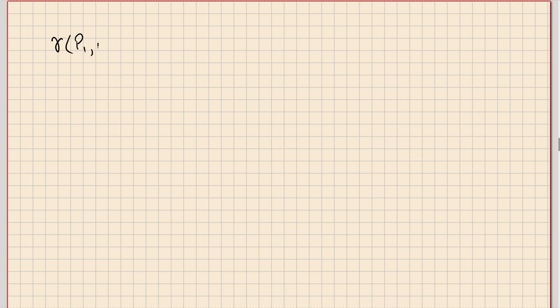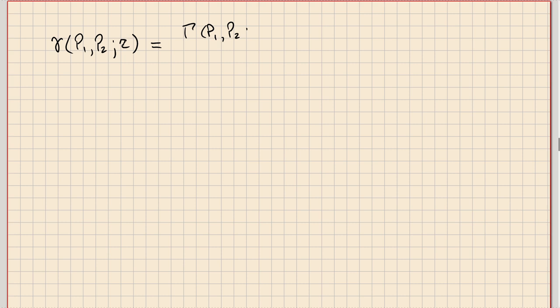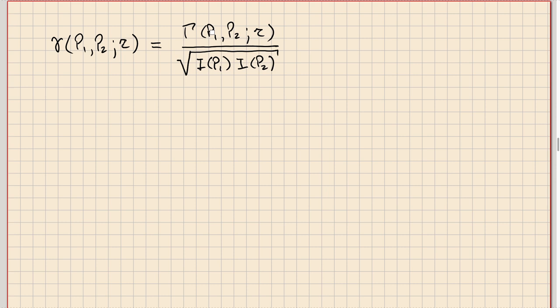Just as we did for self-coherence, it's convenient to define a normalized version of the mutual coherence function: little gamma of P1, P2, and tau, which equals big Gamma of P1, P2, and tau, normalized by dividing by the square root of the product of the intensities at the two points, square root of I of P1 times I of P2. As P1 and P2 become the same point, this reduces to just what we had with the complex degree of coherence for the self-coherence function of a single source. We call this the complex degree of mutual coherence.